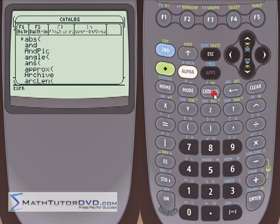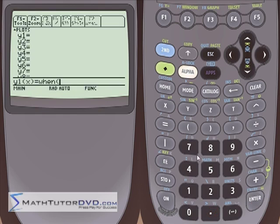Go into the catalog, and you want to go down to when. So instead of going to W, just hit W down here, and it'll take you to the W's. The very first thing is when. So hit enter, and now you see y equals when, and it opens a set of parentheses for you. So it's basically going to get you to fill in the blanks here.